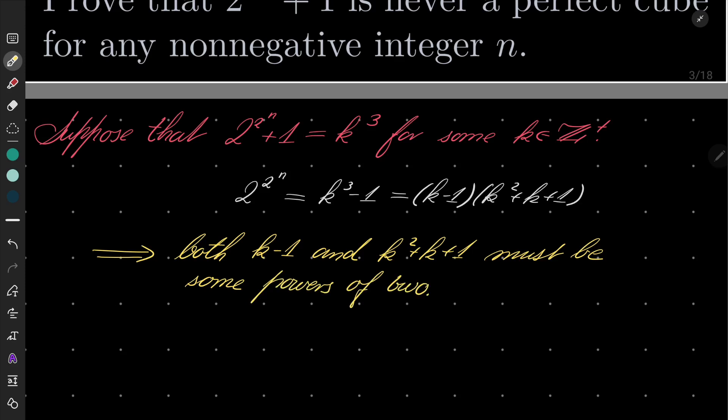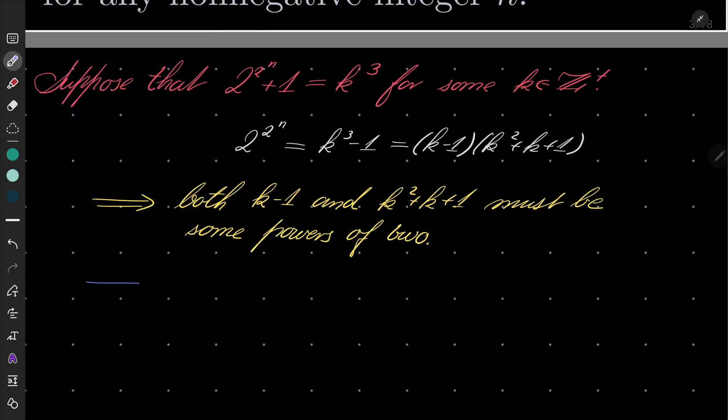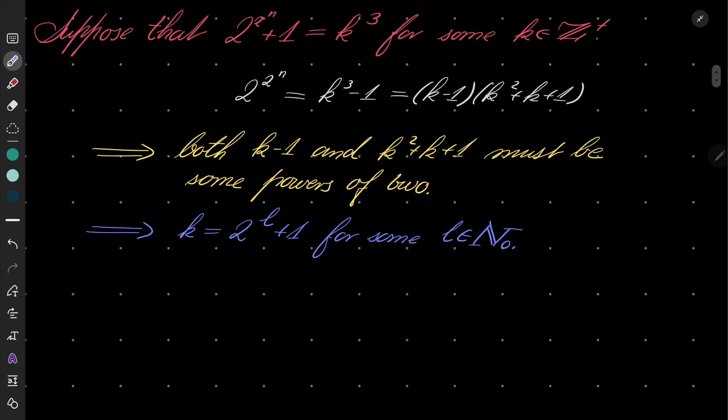Okay, so let's use it. That implies that k must be equal to 2 to the power l plus 1 plus 1 for some natural number l. But now if you have that, notice that k squared plus k plus 1...